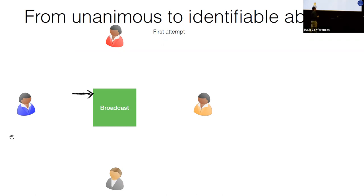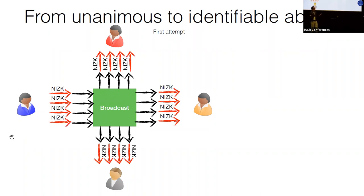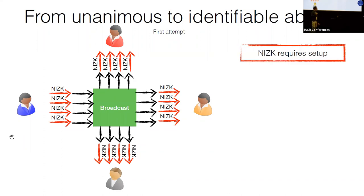Focusing on the messages of the purple party on the left, each message goes into the broadcast channel so every party receives it. One approach to achieve identifiable abort is to attach a non-interactive zero-knowledge proof to each message, so any party can verify correctness even if the message is not directed to them. However, this requires some special properties like perfect correctness on the MPC protocol, and more critically, non-interactive zero-knowledge requires setup, which we want to avoid.